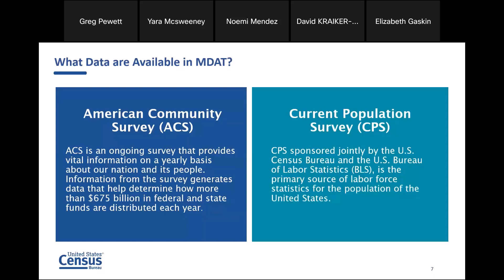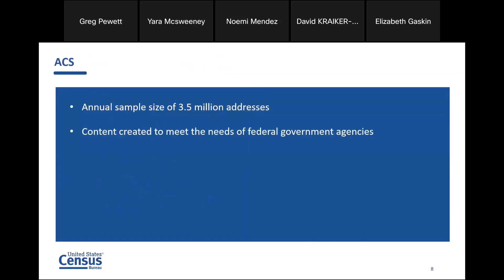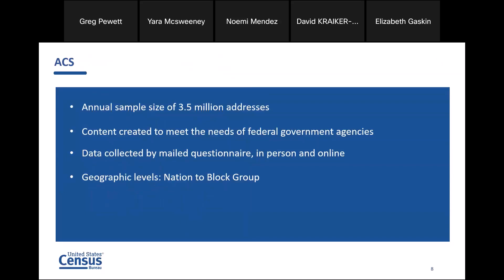Then we have the Current Population Survey. CPS is sponsored jointly by the U.S. Census Bureau and the U.S. Bureau of Labor Statistics. This is the primary source of labor force statistics for the population in the United States. Just an overview of ACS: this is an annual sample of about 3.5 million addresses. The contents are created to meet the needs of federal government agencies. The data is collected by mailed questionnaire, in person, and online. The geographic levels go from the nation down to the block group. The data is released in the fall — the one-year in the fall and the five-year in the winter.